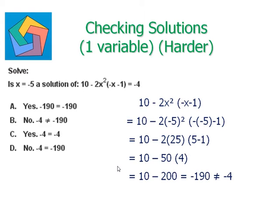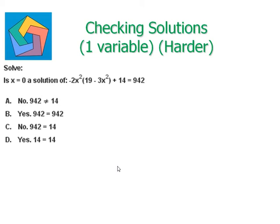That gives us negative 190. However, the RHS says this expression should equal negative 4. That means x equals negative 5 does not solve this equation, so our answer is option B: No, negative 4 is not equal to negative 190. Next example: is x equals 0 a solution of this equation?